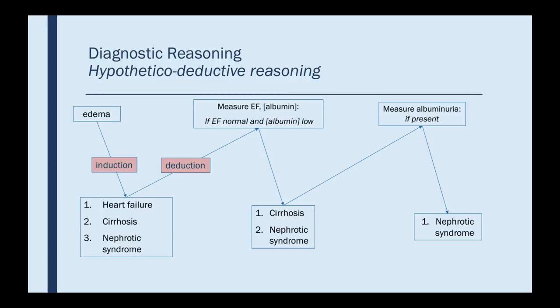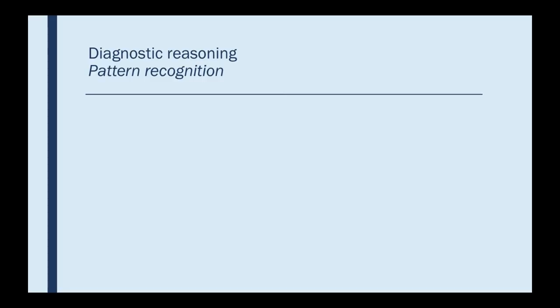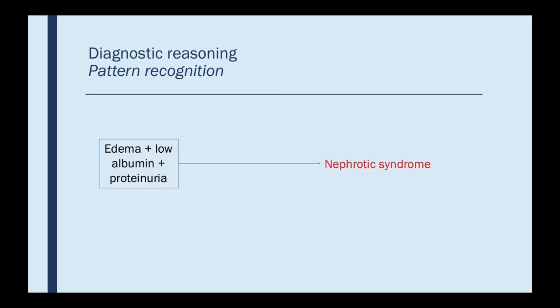This is a slow process with a lot of cognitive load — you have to sit and think, make assumptions, make some deductions. This is what we would call slow thinking. But there's another way to get to a diagnosis, and that's through pattern recognition. What if somebody comes into the emergency room complaining of edema and you find right then and there a low albumin in the protein area? That is recognizable as the pattern of nephrotic syndrome. The more seasoned you get, the more often you'll use pattern recognition to come up with a diagnosis.